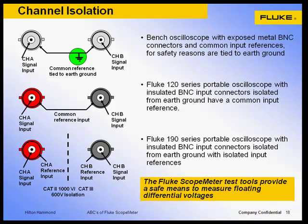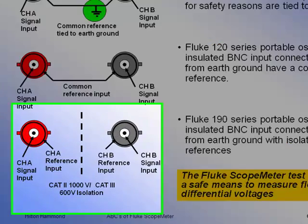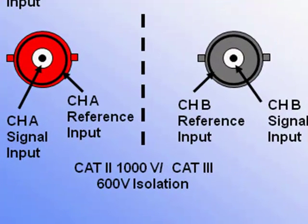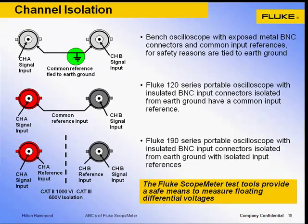The Scope Meter 120 series input references are tied together, while the 190 series or 220 series input references are electrically isolated, providing the optimum solution for troubleshooting differential signals. Again, with the Fluke Scope Meter, the reference point can be connected to the voltage other than earth ground safely floating the oscilloscope. Make sure you read through the user instructions and ensure you understand the instructions specifications and safety warnings.